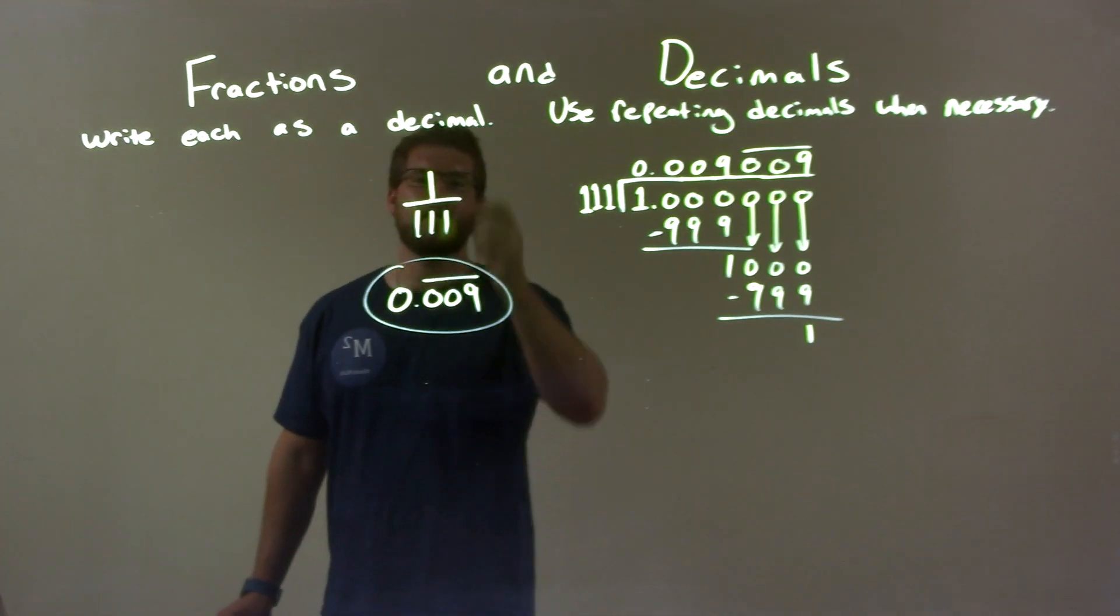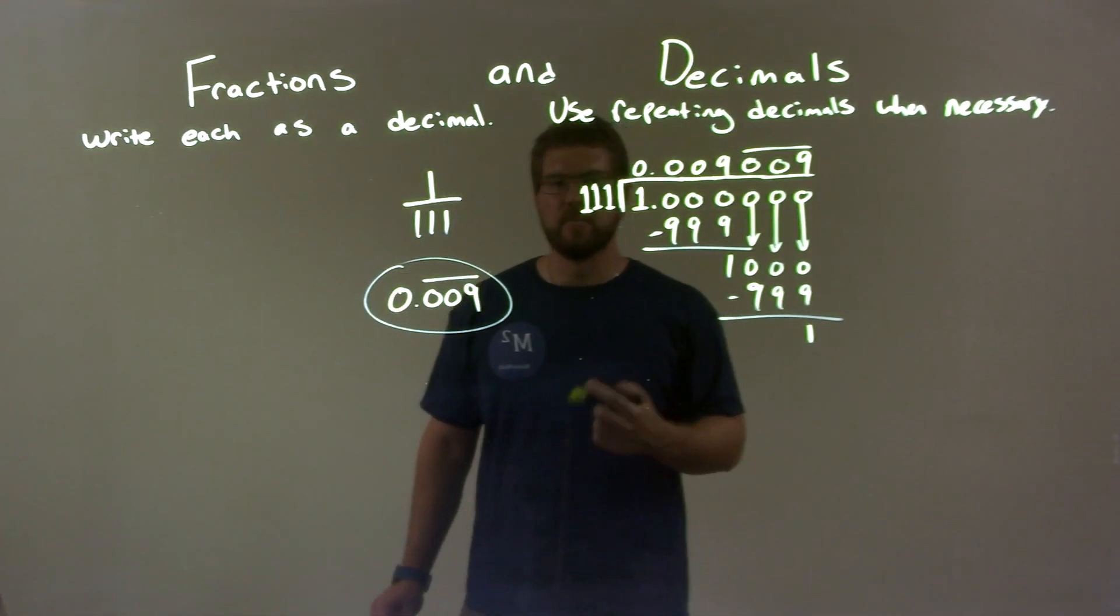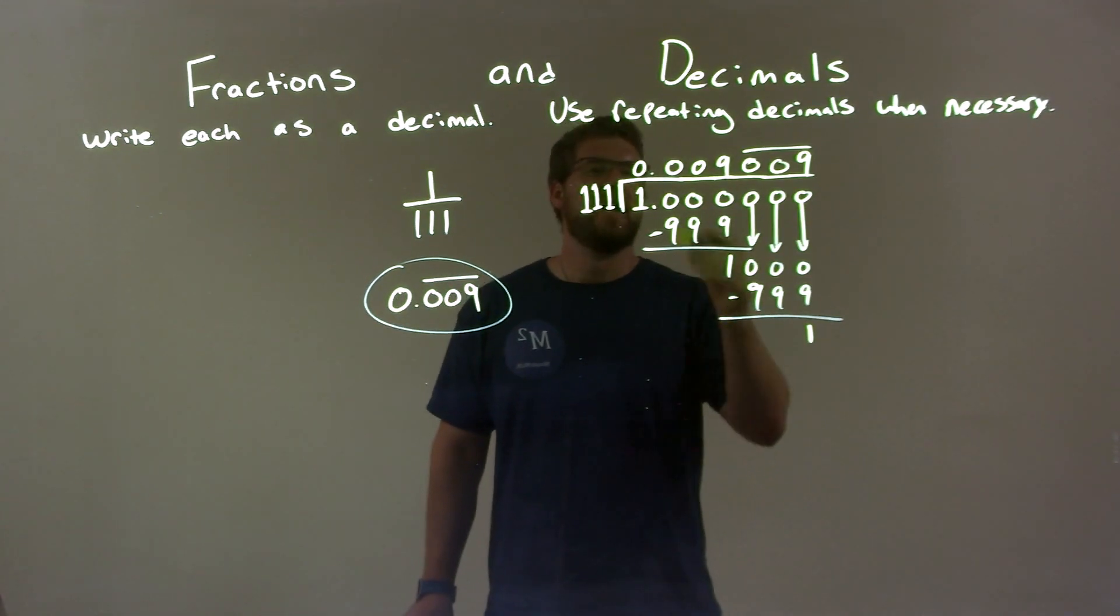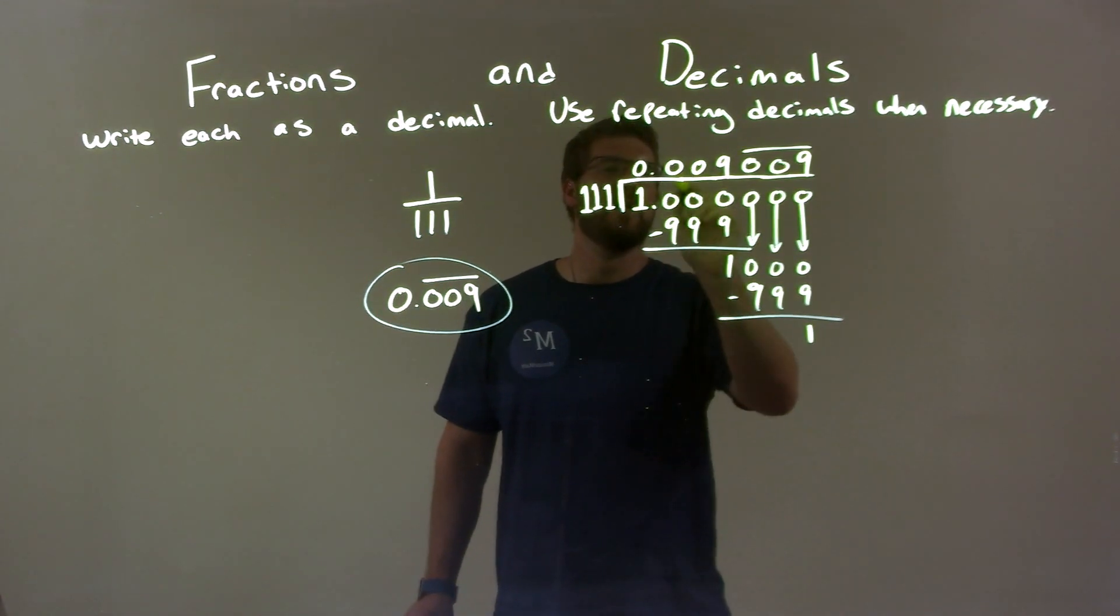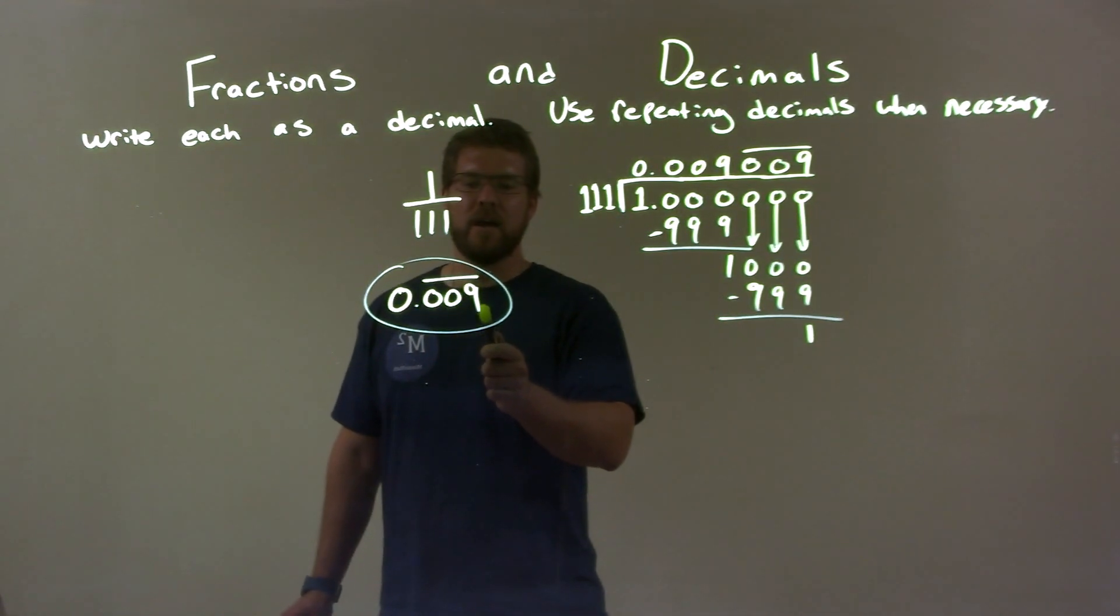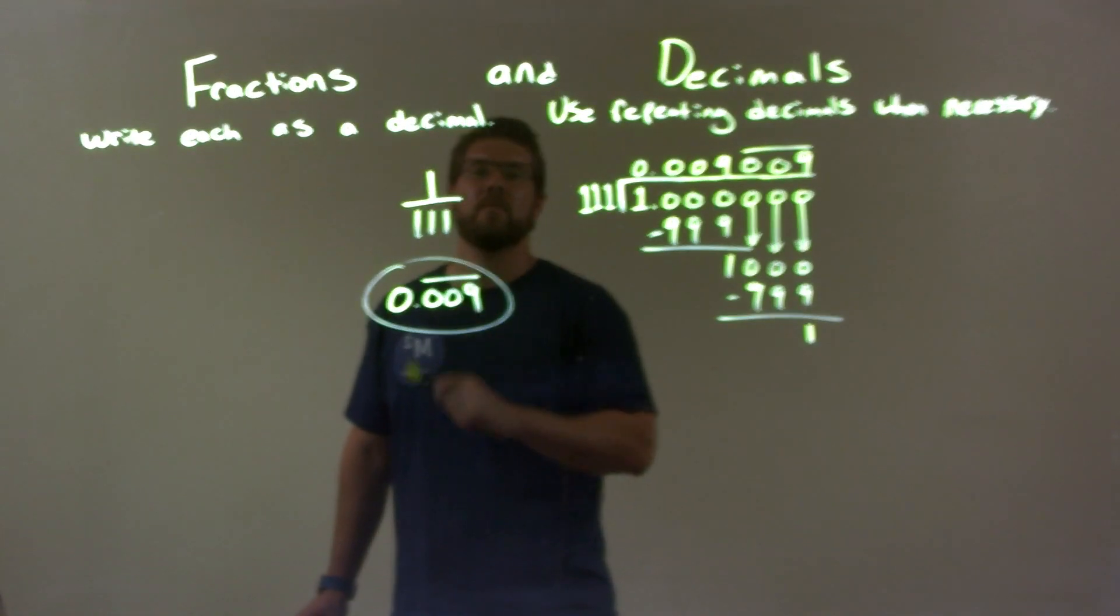So quick recap. We're given 1 over 111. I need to write that as a decimal. I did long division and found that our decimal repeats: 0.009 is what repeats. So again, our final answer is 0.009 with 009 repeating.